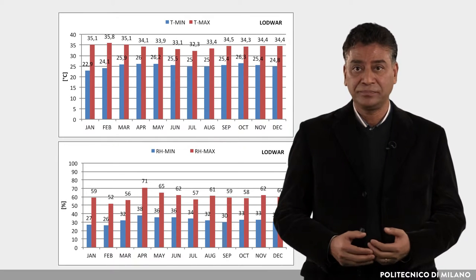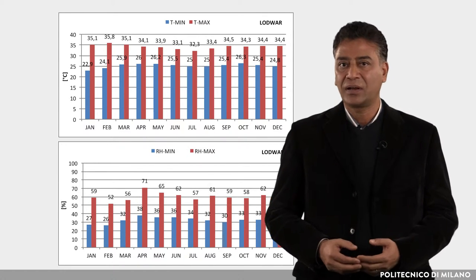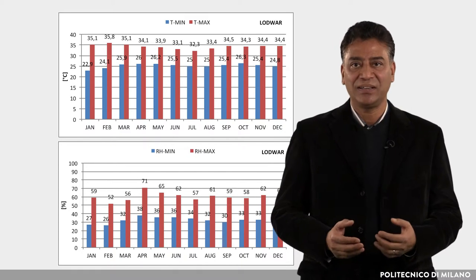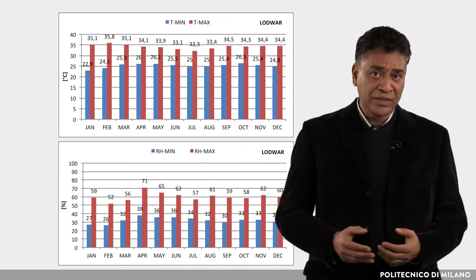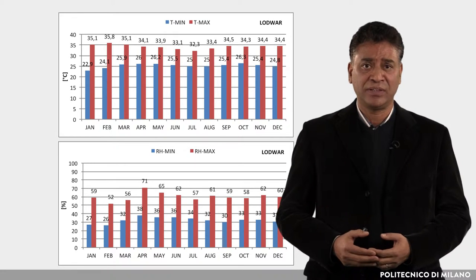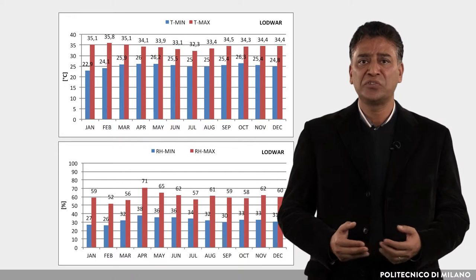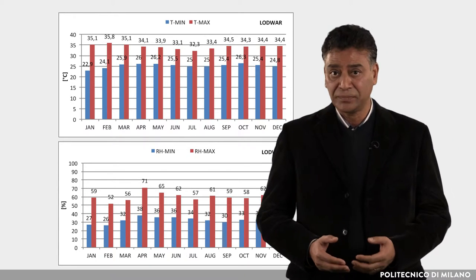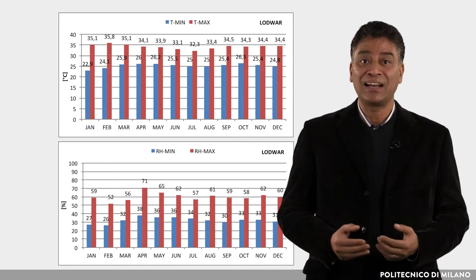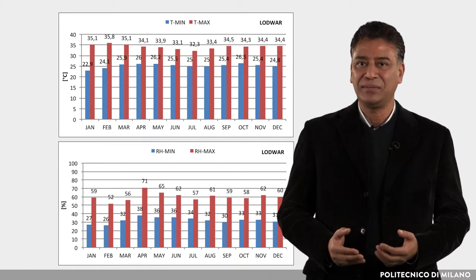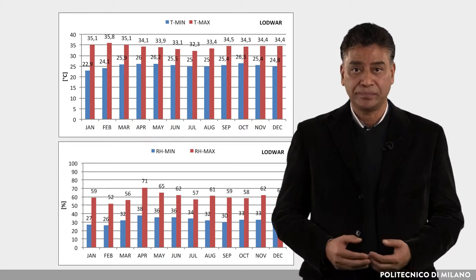Maximum temperatures are high, higher than those of the hot humid climate, and the daily temperature variation is also high. Humidity, especially in the hottest hours, is very low. Breezes are generally light with no strong predominant direction. The wet and dry seasons correspond to those on the coast at the same latitude, but both seasons are much drier.